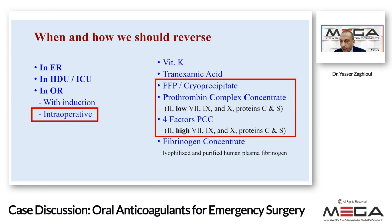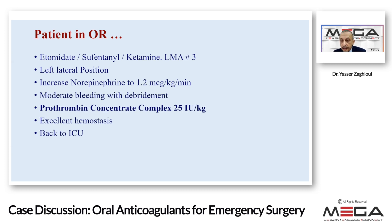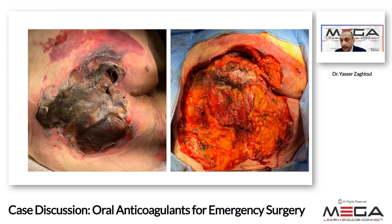We decided to reverse intraoperatively — allowing the surgeon to begin and assess surgical bleeding first. If bleeding was significant, we would reverse fully or partially based on clinical findings, not blindly. Anesthesia was induced with fentanyl and ketamine. She was placed in lateral position and a laryngeal mask was used — intubation was discussed but avoided given her age and risk of postoperative ventilation dependency. Norepinephrine was increased to 1.2 mcg/kg/min during surgery. When moderate bleeding was observed, we gave PCC 25 units/kg to reverse apixaban. At the end of surgery, there was excellent hemostasis. You can now see the difference — a wide raw area of approximately 40 by 40 cm with excellent hemostasis and no microvascular bleeding.